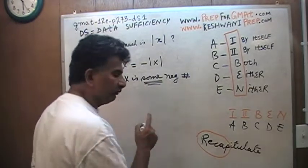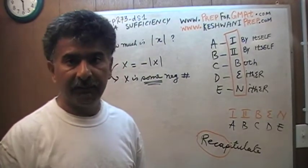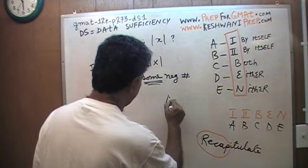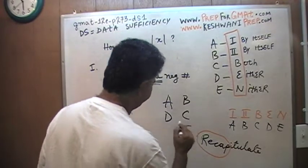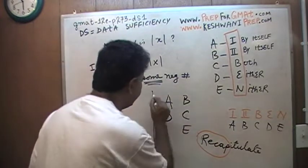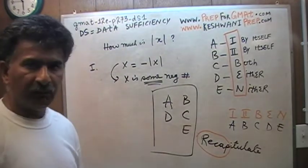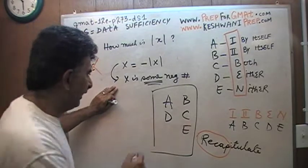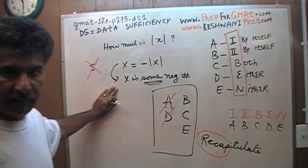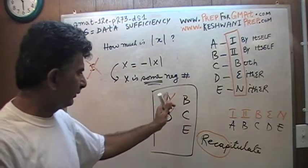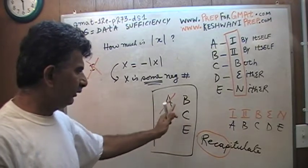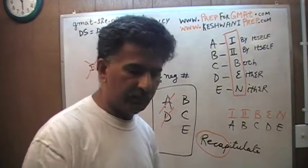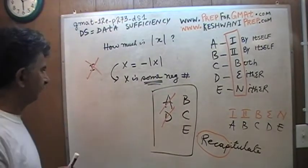The very first thing you should do when taking the GMAT exam: as soon as the data sufficiency problem appears on the screen, write down A-D-B-C-E. Memorize it, learn it, know it by heart. The first statement is not enough by itself. That tells me the answer cannot be A, it cannot be D. If statement one were enough, I would have crossed out B, C, and E.